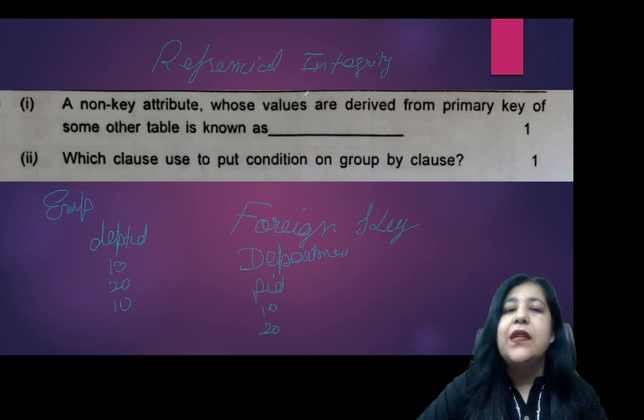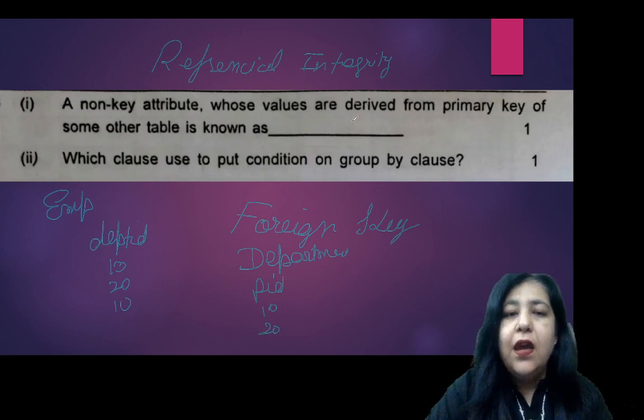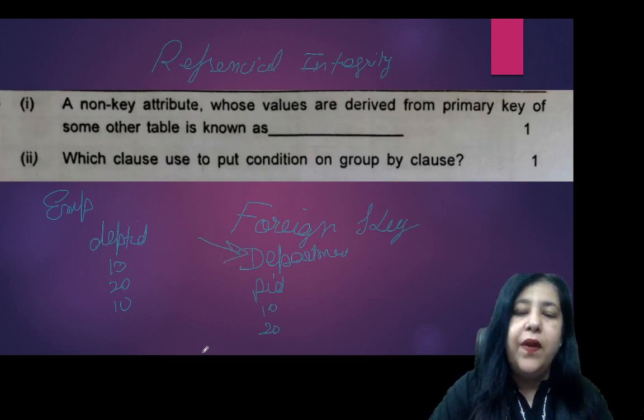Right, so the answer is foreign key. And if it is asked in the form of referential integrity, then it means that foreign key can be those values that are present in the primary key.